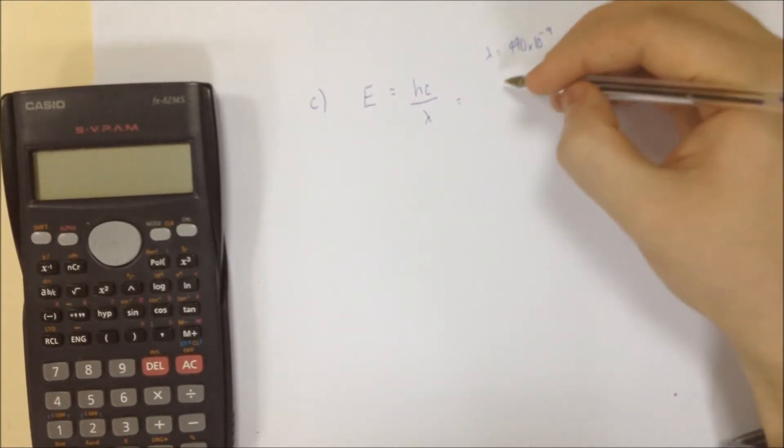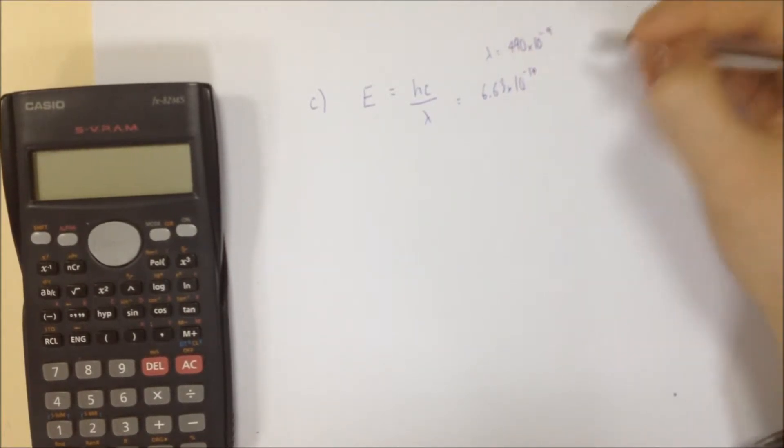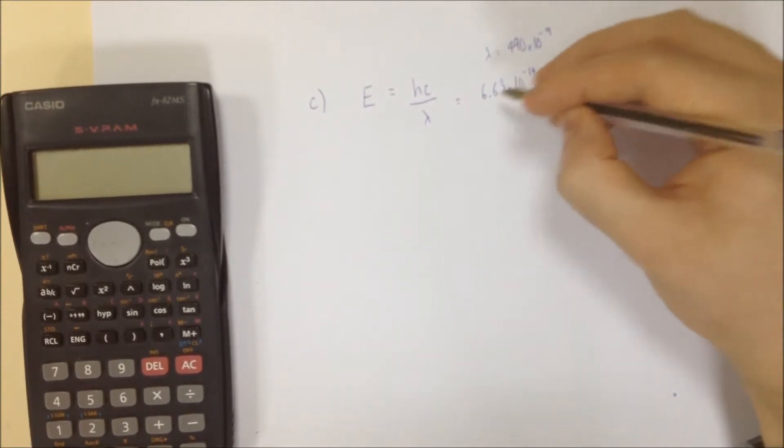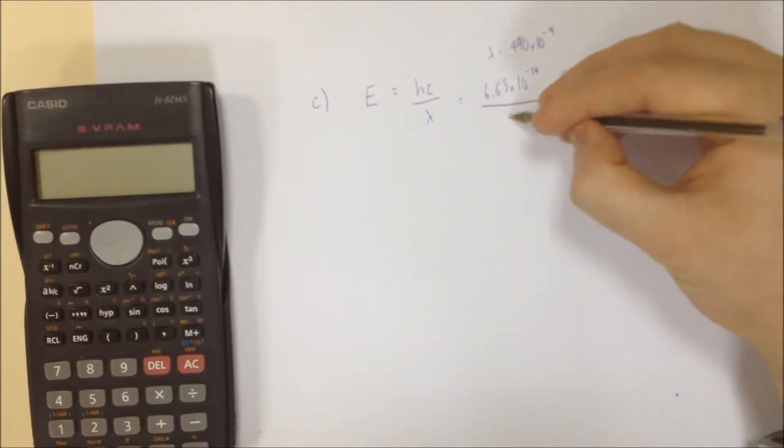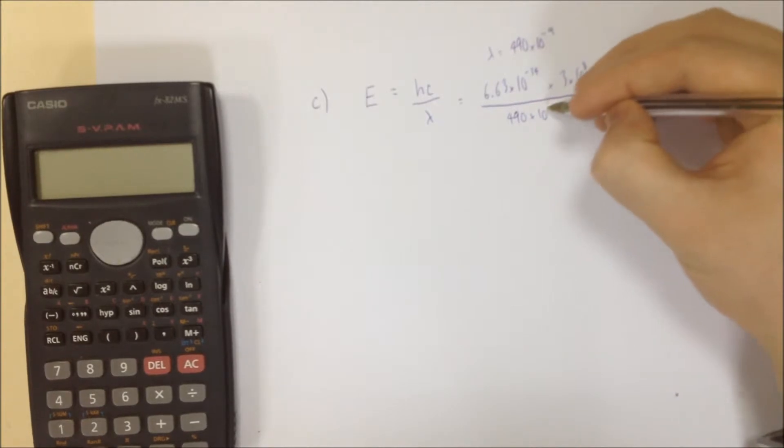The rest of this is constant, so 6.63 times 10 to the minus 34, multiplied by the speed of light, 3 times 10 to the 8, divided by the wavelength of 490 times 10 to the minus 9.